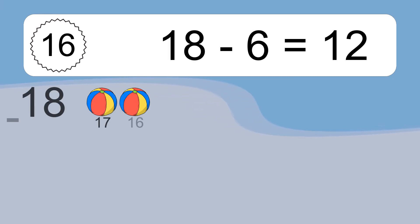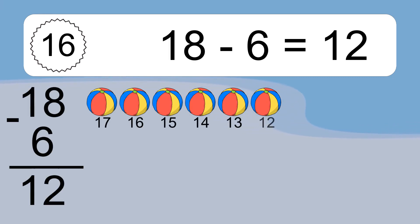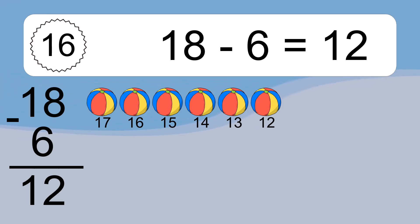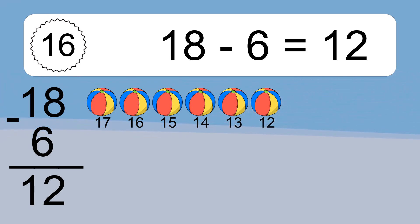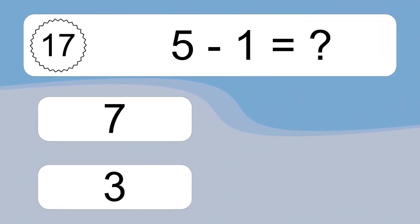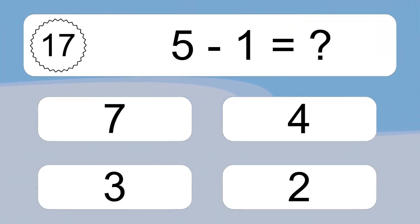18 minus 6 equals 12. Let's count it: 17, 16, 15, 14, 13, 12. 5 minus 1 equals what?